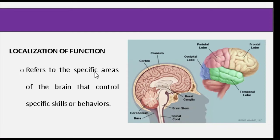We also have the localization of function, which refers to specific areas of the brain that control specific skills or behaviors. On this picture, we have the frontal lobe — which is toward the forehead; the parietal, which is at the top of the head; the occipital, which is near the back of the head; and the temporal, which is near the temple area close to the ears.